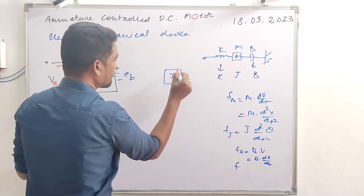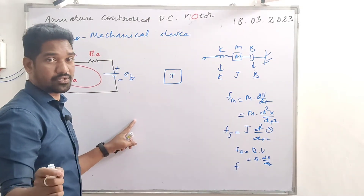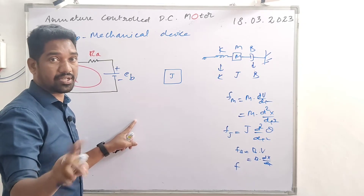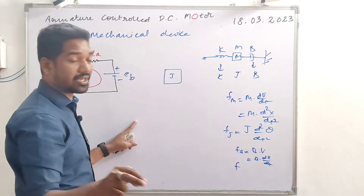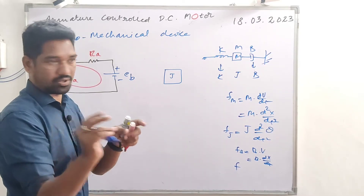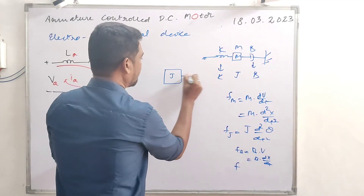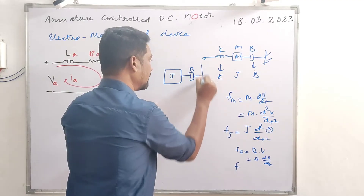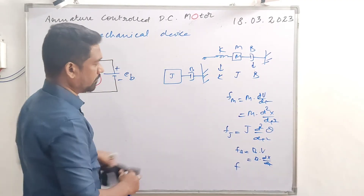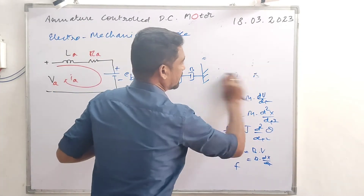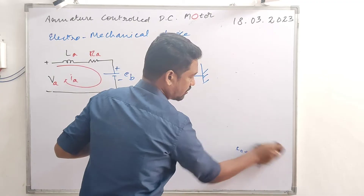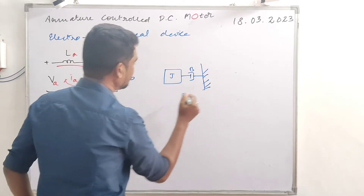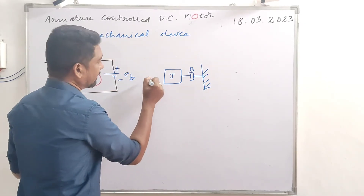For the mechanical part of the motor, we have moment of inertia J. The motor shaft rotates, and elasticity and spring constant K also come into the mechanical part, along with friction B. The final output of the mechanical part is shaft rotation. The displacement x becomes angular displacement theta.